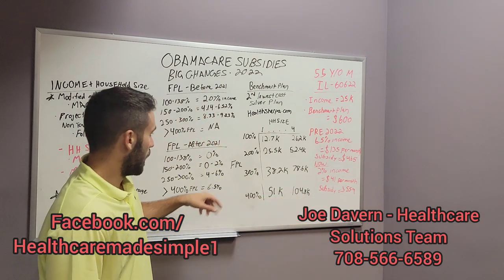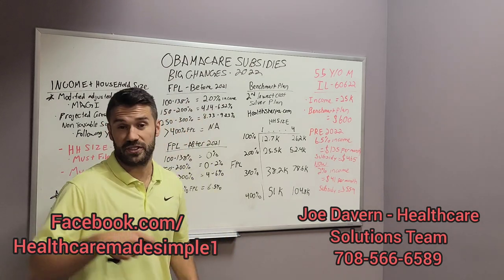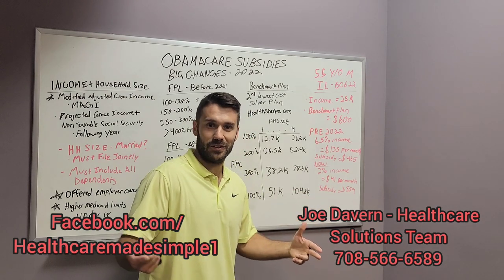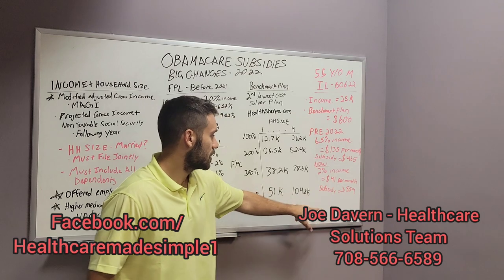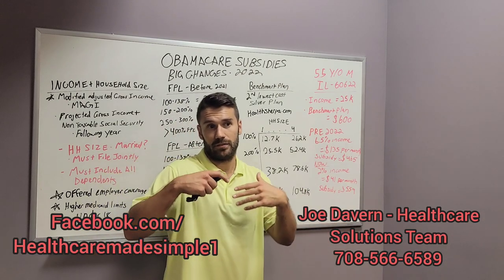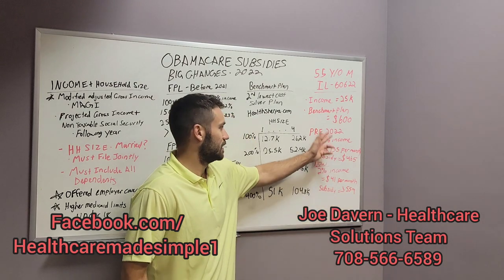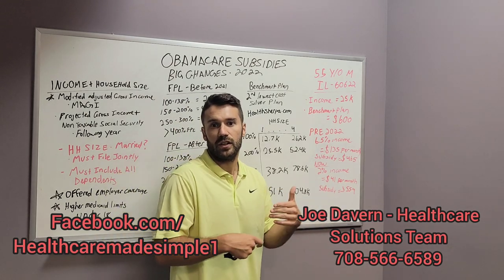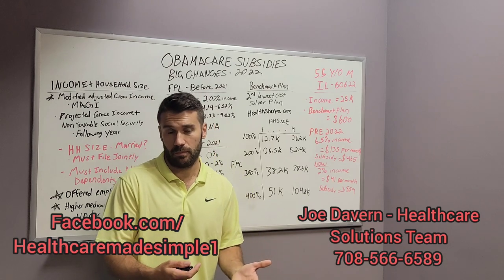Moving forward to 2022, this same person at 200% federal poverty level would only have to pay 2% of their income. So $25,000 divided by 12 times 2% — the most you could pay for that benchmark plan is $41 a month. That means your subsidy is no longer $465, it's now $559. Plans with more benefits than silver level will also see higher subsidies, and for bronze level plans, the $559 is likely going to cover the entire monthly premium.